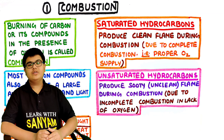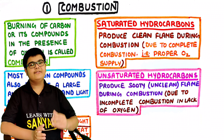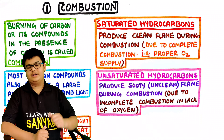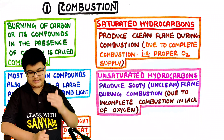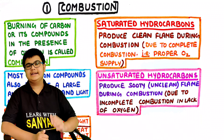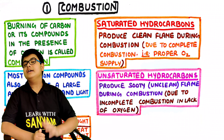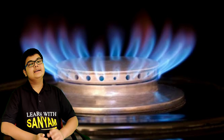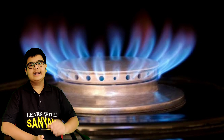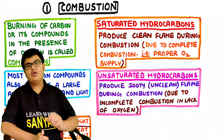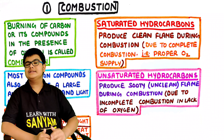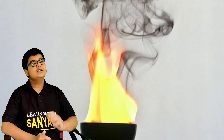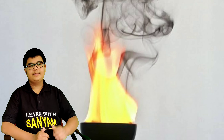Combustion is of different types depending on which carbon compounds get burned. When saturated hydrocarbons — that is, single-bonded hydrocarbons — get burned, they produce a clean flame, because complete combustion takes place with a proper oxygen supply. But when unsaturated hydrocarbons get burned, they produce a sooty or unclean flame during combustion.